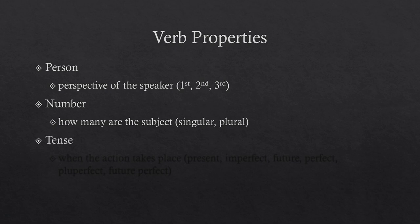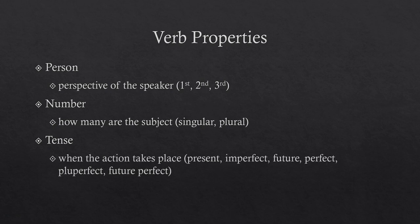Tense is a big property that we talk about a lot because it has a lot of different options — the one with the most options. This tells us when the action takes place; you can think of tense essentially as a synonym for time. When does the action happen? Our options include present, imperfect, future, perfect, and future perfect. This is typically how we divide up our verbs when looking at Latin forms in a chart or paradigm.